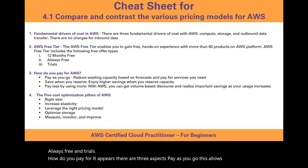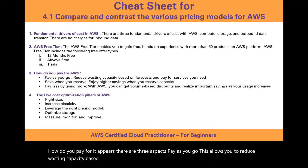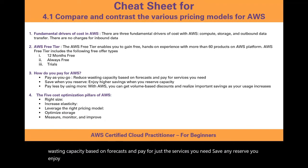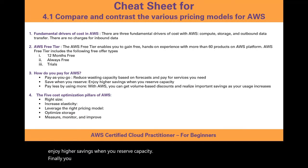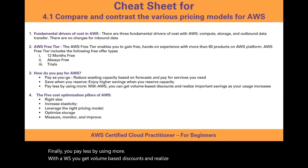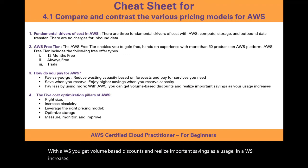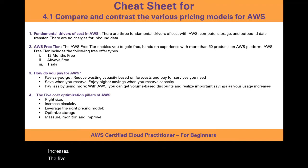How do you pay for AWS? There are three aspects: Pay as you go, which allows you to reduce wasted capacity and pay only for the services you need. Save when you reserve — you enjoy higher savings when you reserve capacity. Pay less by using more — with AWS you get volume-based discounts as usage increases.